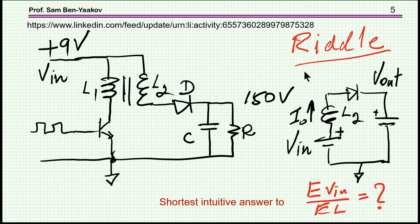So the question was, looking at this circuit with an inductor having an initial condition of I_0, what is the shortest intuitive answer to the energy delivered to the output from V_in to the energy delivered to the output from the inductor? Now, this is an important question because it sort of discusses or maybe clarifies a misconception that sometimes we do have.